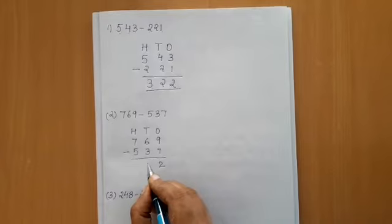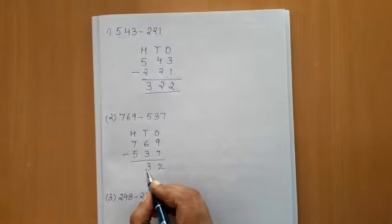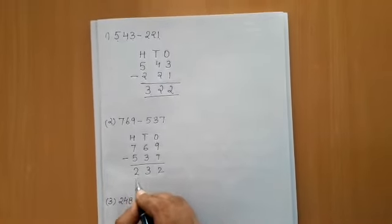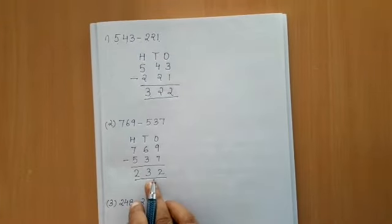6 minus 3 is 3. And 7 minus 5 is 2. The answer is 232.